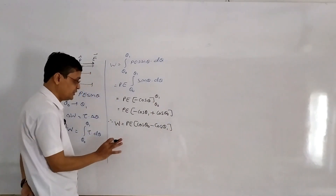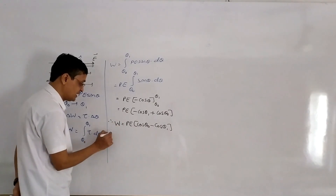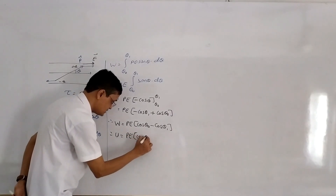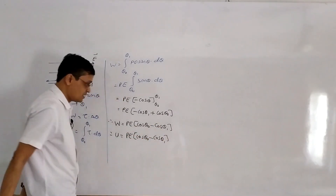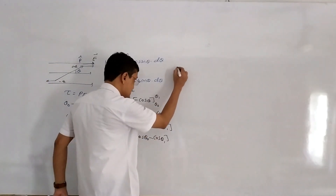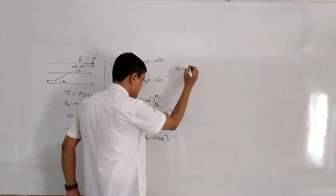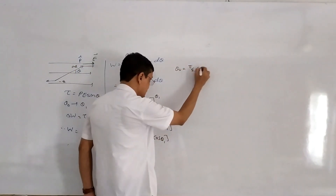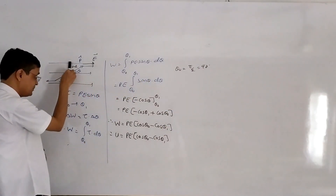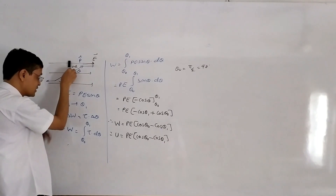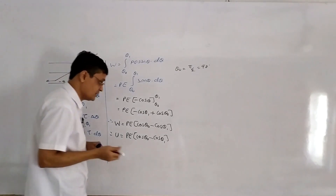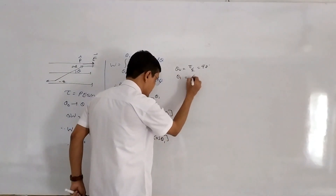Since the field is a conservative field, the same formula applies for energy. Energy is equal to PE (cos theta₀ minus cos theta₁). We take the initial angle theta₀ equal to pi/2 (90°), meaning the dipole is placed perpendicular to the electric field, and bring it to angle theta₁ equal to theta.